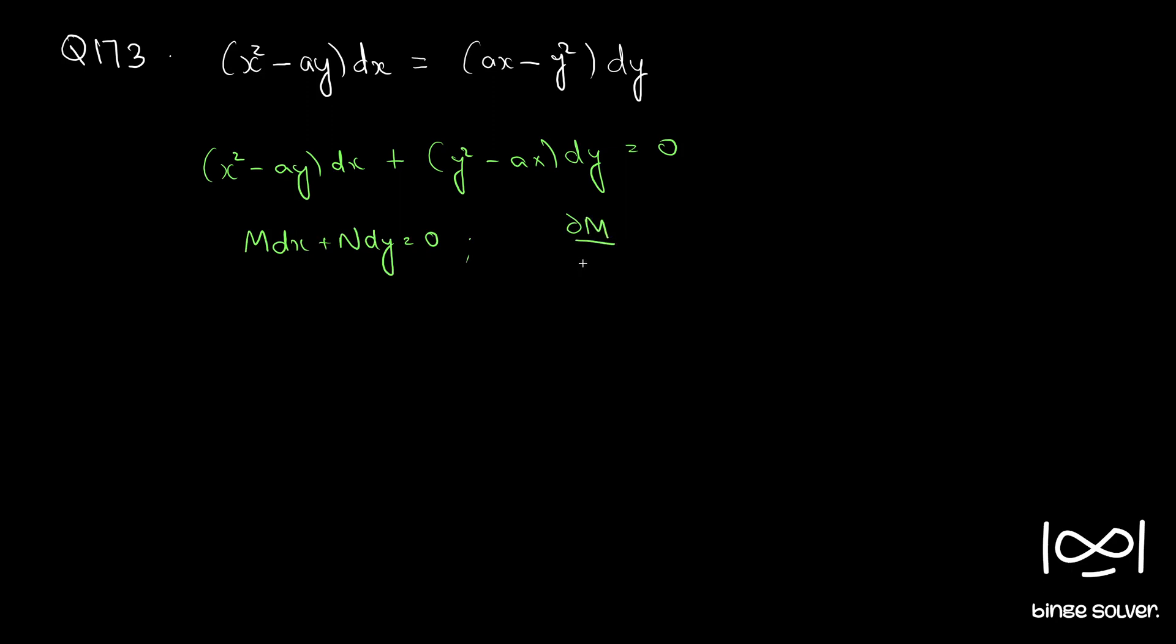By using the necessary and sufficient condition ∂M/∂y = ∂N/∂x. For that, M = x² - ay and N = y² - ax.